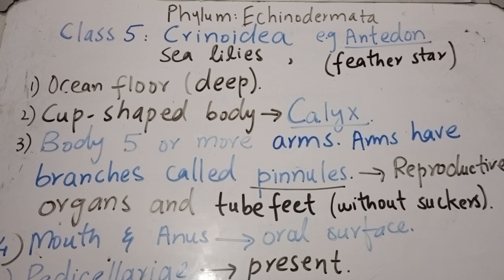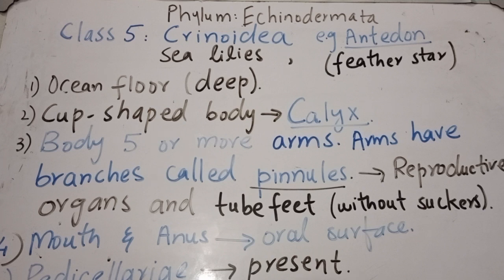Crinoidea includes sea lilies and feather stars; the genus of feather star is Antedon. Members are found on the ocean floor in deep water. Their body is cup-shaped, called a calyx, and is attached to the substratum by the aboral surface or by a stalk. The body bears five or more arms which have further branches called pinnules; these pinnules contain reproductive organs as well as tube feet, which lack suckers.